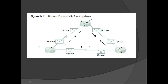Routers dynamically pass updates. For example, if you have Router 1, Router 2, and Router 3, if there are changes on Router 1, it will update Router 2 and the other routers, so they will know that there are changes on the configuration. At the same time, it can define if the configuration allows a specific path on the network.